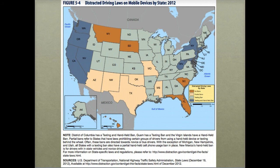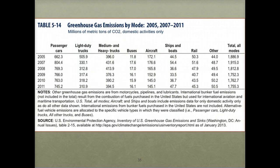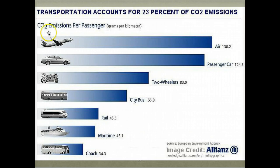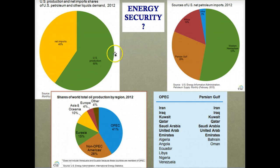Several states have since enacted laws to ban or limit mobile devices while driving. The Department of Transportation report also includes a table showing greenhouse gas emissions by mode and year, with passenger vehicles and trucks comprising about 60% of all greenhouse gas emissions from the sector in 2011. When emissions are normalized per passenger and distance, air travel has the greatest greenhouse gas emissions per passenger per kilometer, followed closely by passenger cars. Although the United States currently produces more oil than it imports and gets most of its imported oil from the Western Hemisphere, mainly Canada, the price of oil is set in a global market, and therefore the price we pay is still very much dependent on geopolitical events in the OPEC region and in the Persian Gulf.